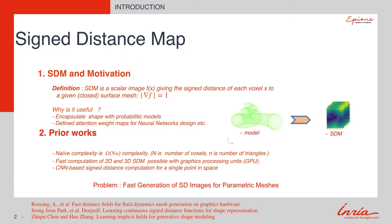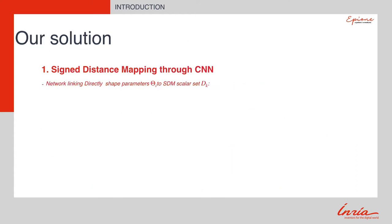Nowadays, since the computing time of signed distance map is quite time-consuming, plenty of works have been proposed for reducing this defect. But still, the times are limited due to the hardware resources. In order to overcome those limits, in our work, we proposed a method that directly maps from the shape representation parameter space to the distance scalar field, instead of using mesh rasterization.